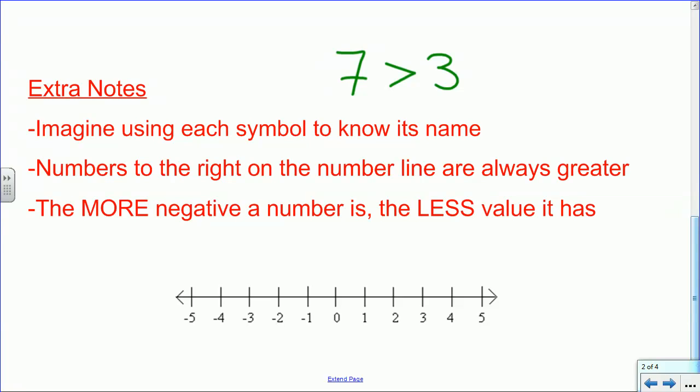Second extra note is numbers to the right on the number line are always greater. People are used to thinking about the inequality or the relative value signs eating the bigger numbers, so they think of it like an animal, like an alligator. They might do this to show that 1 is greater than 2, but that's always the case no matter where you move this on the number line. It's always going to open up to the right, and this is going to help us when we're thinking about the negative side or the left side of the number line.